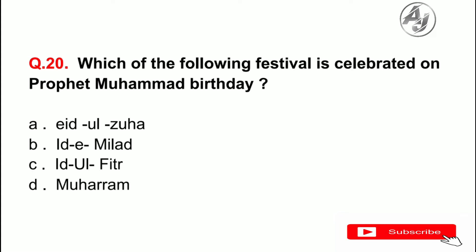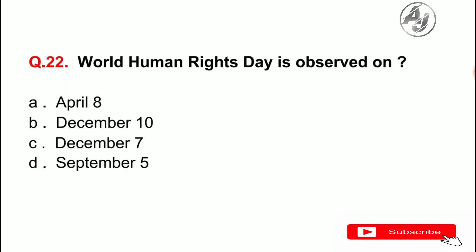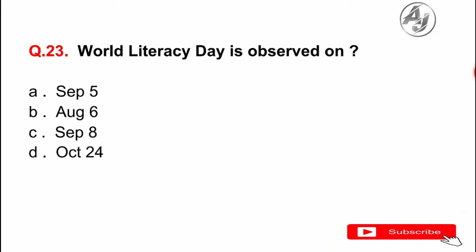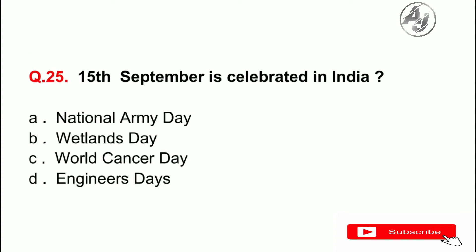Question number 20: Which of the following festivals is celebrated on Prophet Muhammad's birthday? The answer is B — Eid-e-Milad. Question number 21: 1981 was the International Year of the — the answer is A — Disabled. Question number 22: World Human Rights Day is observed on — the answer is B — December 10. Question number 23: World Literacy Day is observed on — the answer is C — September 8. Question number 24: 14th September is celebrated as — the answer is B — National Hindi Divas.